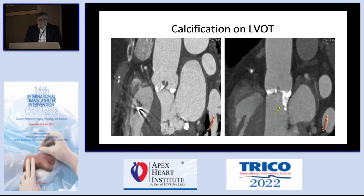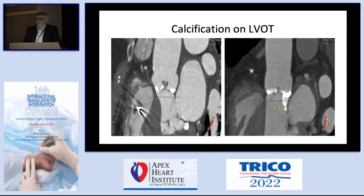We saw a patient this morning who had severe calcification in the ST junction. More commonly, you see patients who have severe calcification at the annulus level extending down to the left ventricular outflow tract. These patients, when you use a balloon for pre-dilatation or post-dilatation, or use a balloon-expandable valve, are at high risk for annulus rupture — a much higher risk of a suboptimal outcome.